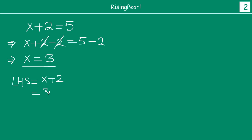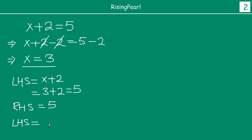If we put 3 in place of x, we get 3 plus 2 which is 5, and our right hand side is also equal to 5. So we say that for x equal to 3, the left hand side is equal to the right hand side. So this value x equal to 3 satisfies this equation, because left hand side is equal to right hand side. Therefore x equal to 3 is a solution for our equation.